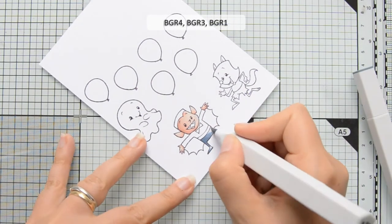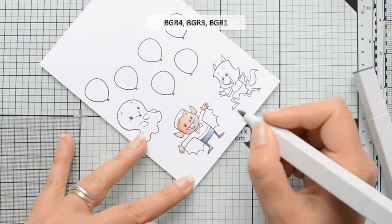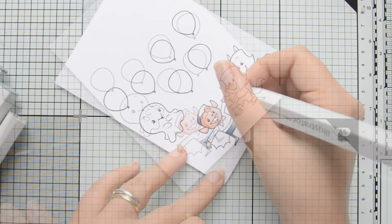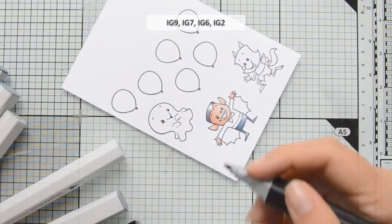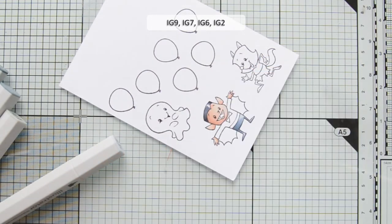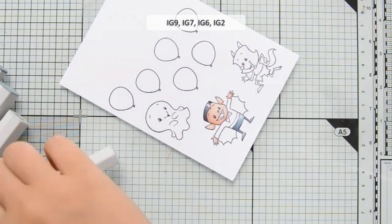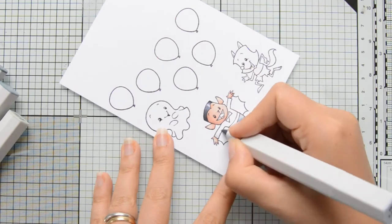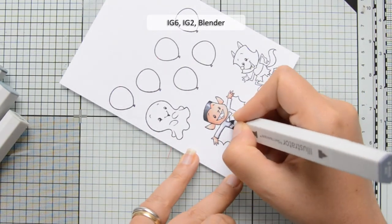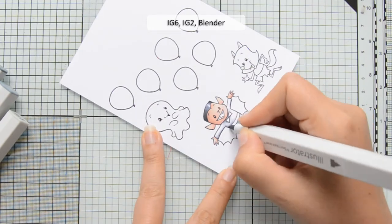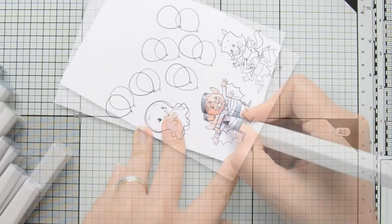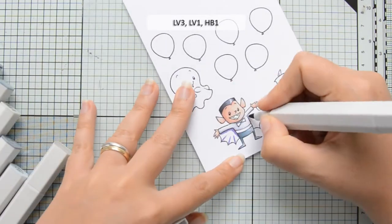For his trousers, I decided to use some blue grays: BGR4, BGR3, and BGR1. I'm starting with my darkest marker and then blending it out towards the highlight. I'm generally using three markers per color, and I'm going to list all the markers on screen, so even if I don't mention them, they will be there for your reference. I colored most of the images as if the light was coming from the top right of the screen.